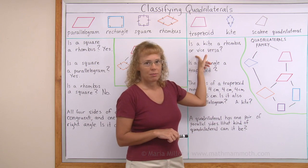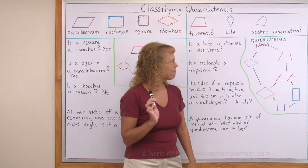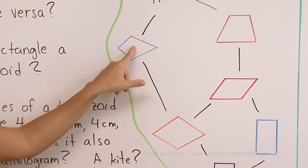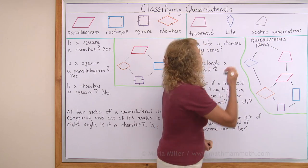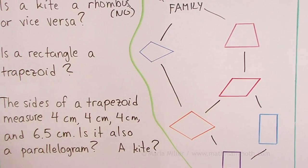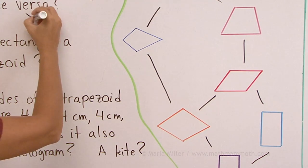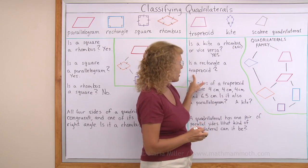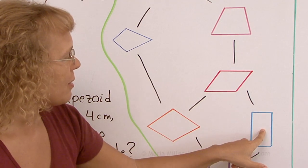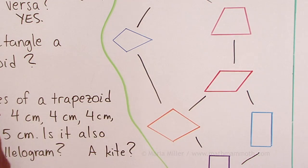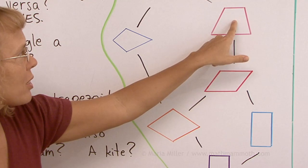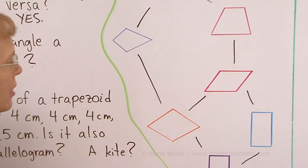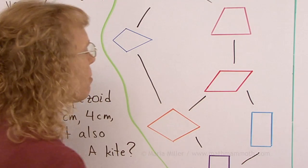Is a kite a rhombus, or vice versa? Is a kite a rhombus? Using the diagram, I find a kite and a rhombus — does the kite belong to the rhombus family? No. Or vice versa: is a rhombus a kite? Yes, because a rhombus is here under the kite, downstream from there. Is a rectangle a trapezoid? You can see from the diagram that yes, a rectangle belongs to the trapezoid family. The definition was that in a trapezoid we have at least one pair of parallel sides, and that is true of the rectangle.